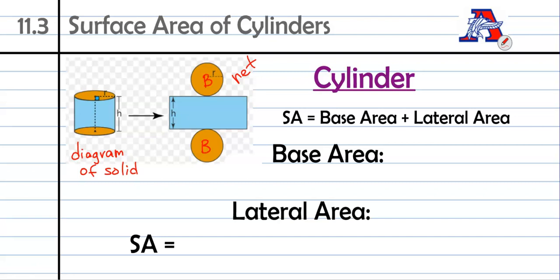So we have two bases and they're circles. So we're going to do pi r squared twice. So our surface area has our base area, that's in orange, plus our lateral area. The lateral area is a rectangle. So I'm just going to say circles plus rectangle.